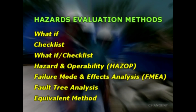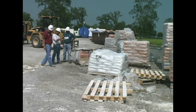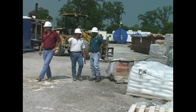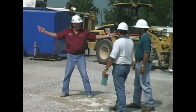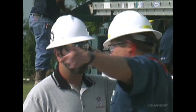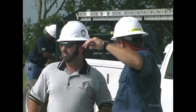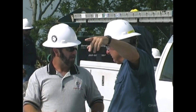Acceptable methods to determine and evaluate the hazards of a process include: what-if, checklist, a what-if/checklist combination, hazard and operability study (HAZOP), failure mode and effects analysis (FMEA), fault tree analysis, or an appropriate equivalent methodology. The team performing the PHA must fully understand the method to be used. The team leader should be knowledgeable in proper implementation of the method and impartial in the evaluation. At least one team member should be familiar with the process being analyzed. Methods may differ for parts of a process, and conclusions are then integrated into one final study and evaluation.